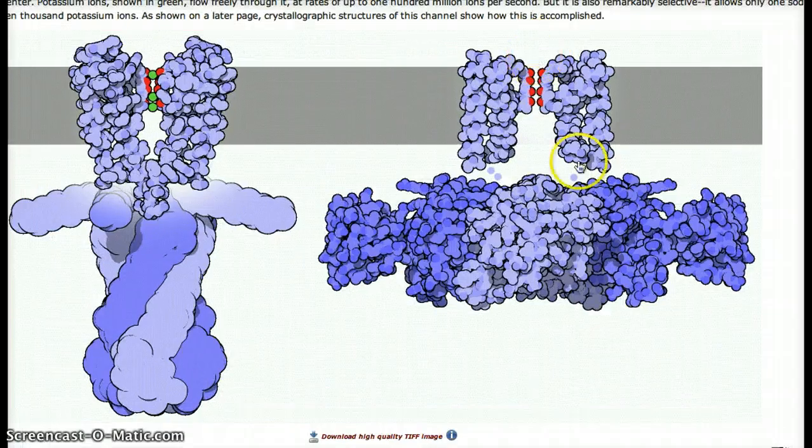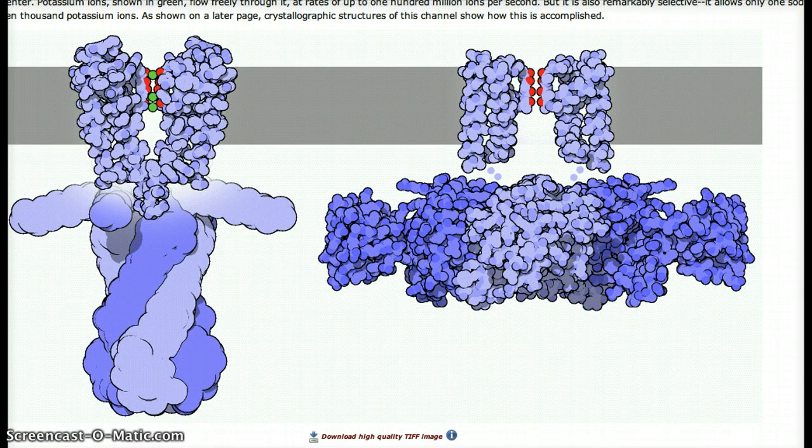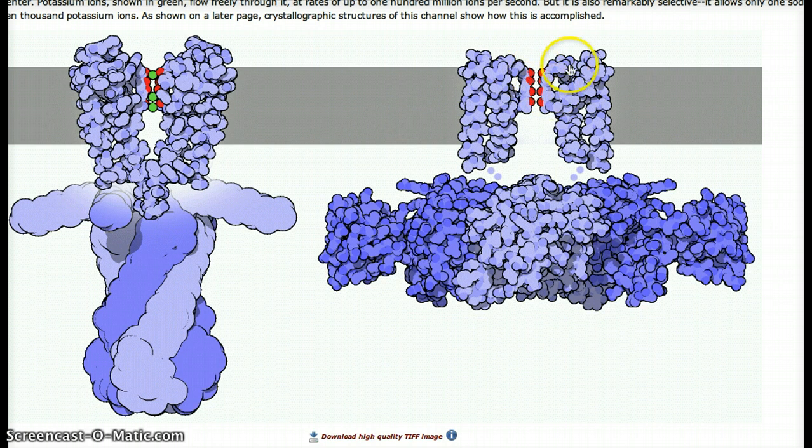Now, here's another image of potassium channels. As you can see, those red little dots line the channels, and they are oxygen atoms, and they replace the function that water molecules do for the potassium ions.